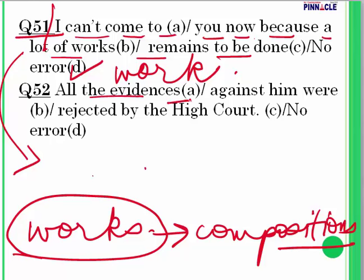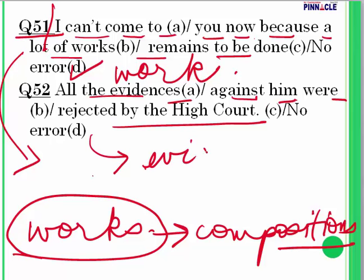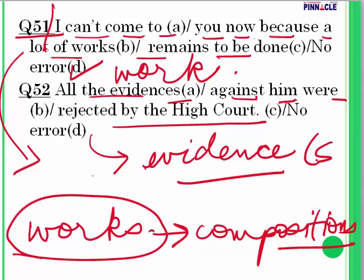Question 52: 'All the evidences against him were rejected by the high court.' The word 'evidence' is uncountable and does not add 's' to become plural. Remove the 's' — 'all the evidence.' Error is in part A.